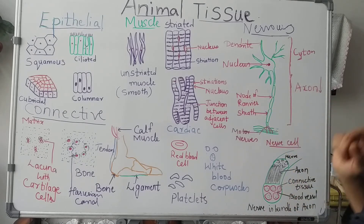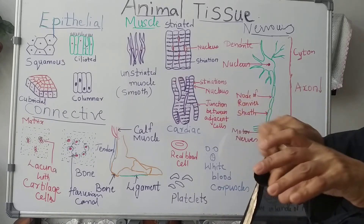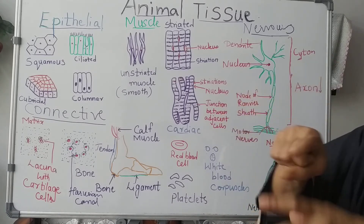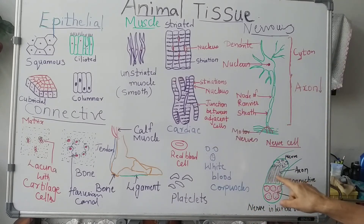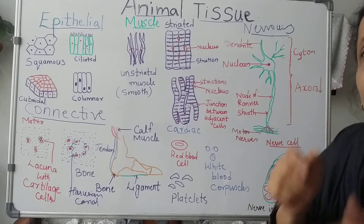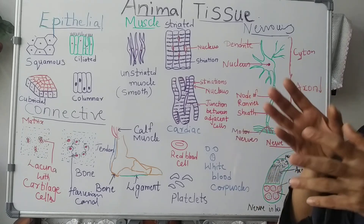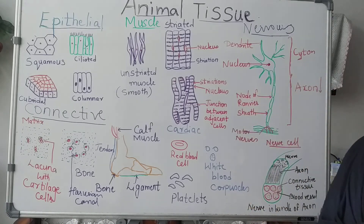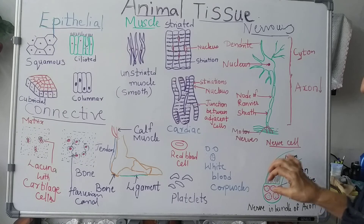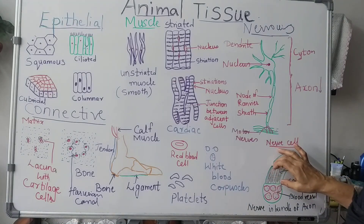Here you can see a diagram which shows a bundle of axons going to the muscles. These axons are joined together with the help of connective tissue, and blood vessels are present to provide nutrition. This forms a bundle for the proper functioning of the muscles.